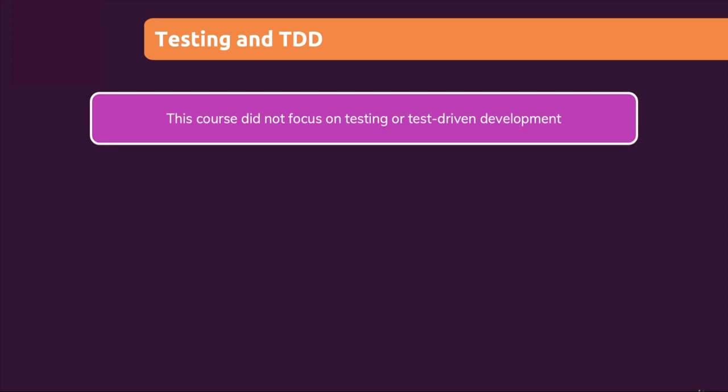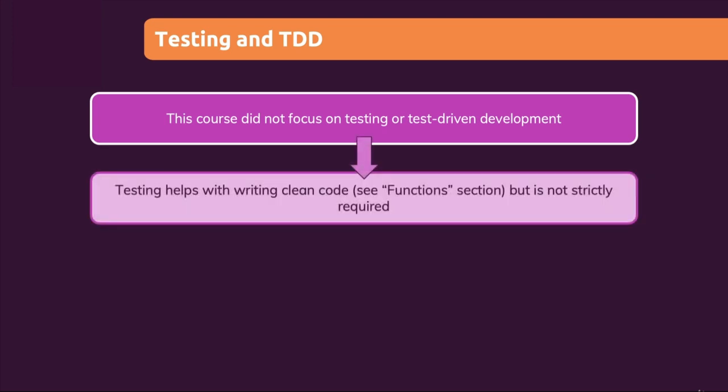Another possible next step would be testing and test-driven development. This course did not focus on testing or TDD at all. I did show that testing helps with writing clean code — in the functions section, I showed that you can determine when to split your functions when you write tests, because it turns out that functions written in a clean way that do just one thing are easier to test. So diving deeper into testing and maybe even test-driven development could be something you want to do as a next step.